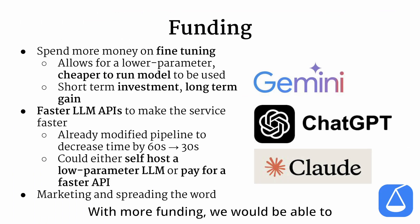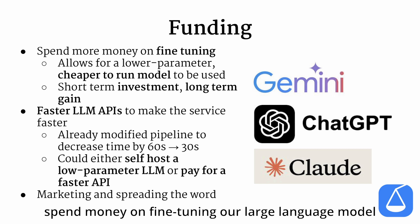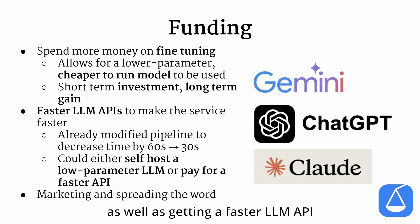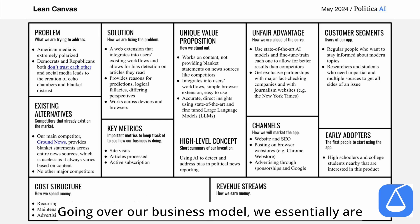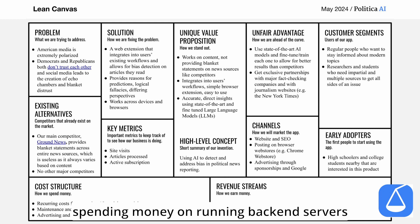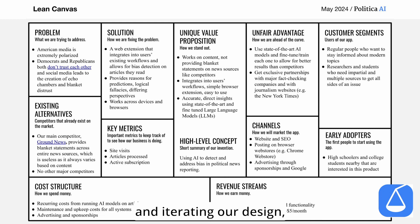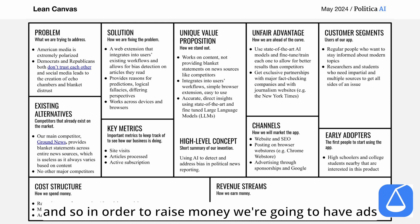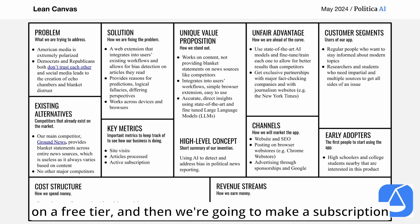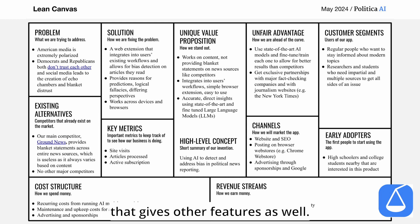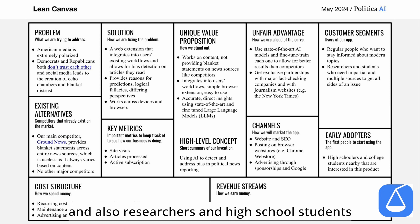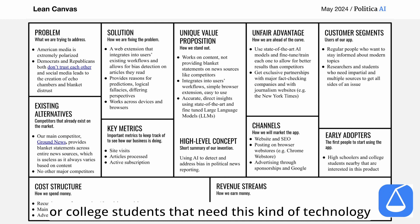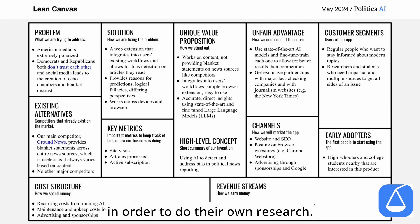With more funding, we would be able to spend money on fine-tuning our large language model to make our application cheaper, as well as get a faster LLM API from a product like Anthropic Cloud to speed up the analysis process. Going over our business model, we are spending money on running back-end servers and iterating our design. In order to raise money, we're going to have ads on a free tier, and then make a subscription that gives additional features. We're going to be sending this out to regular people and also researchers and high school or college students that need this kind of technology for their own research.